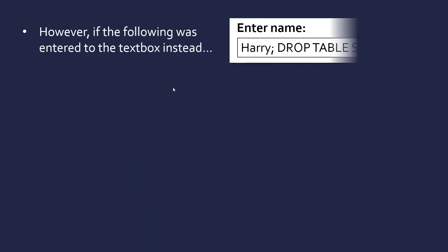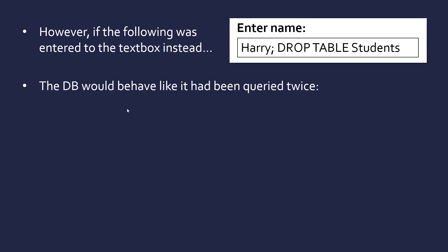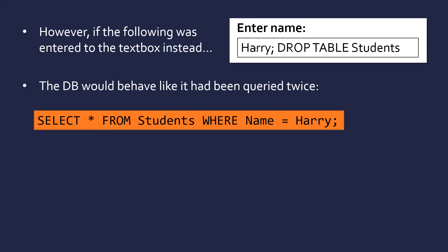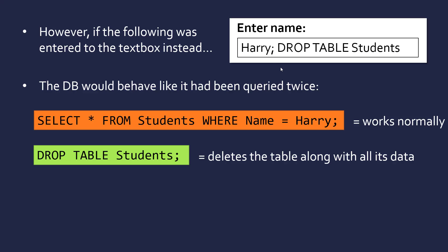However, if instead of just 'Harry' you enter a semicolon followed by 'DROP TABLE students', the database will behave as if queried twice. The database doesn't care if it's on the same line. The first statement executes as before — Harry is substituted normally — but the second part, 'DROP TABLE students', also executes because the semicolon signals the end of the first statement. This has the effect of deleting the entire table along with all its data. DROP is the delete command in SQL. It doesn't have to just be deleting — it could return credit card information or any other data.